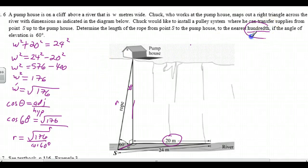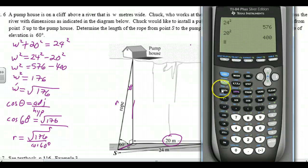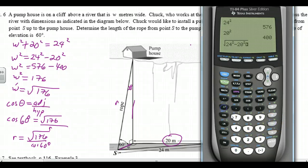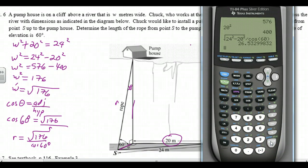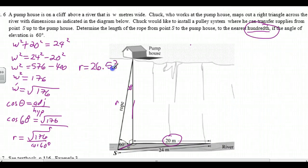On the calculator: root of (24 squared minus 20 squared) divided by cosine of 60 degrees — and we get 26.53. Looking at the next digit, it's a 2, which is less than 5, so we leave it: 26.53. So R is 26.53 meters — the rope is 26.53 meters.